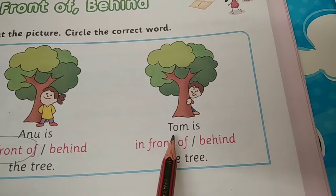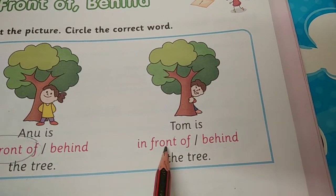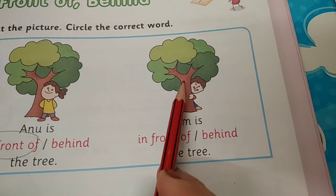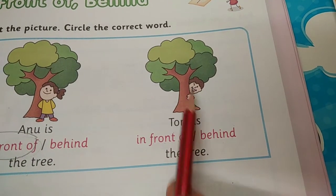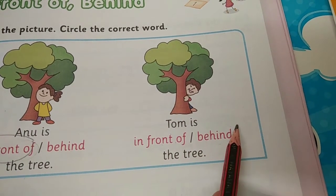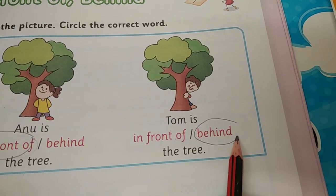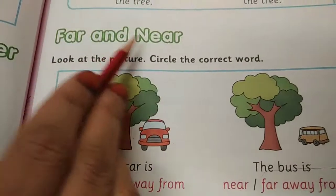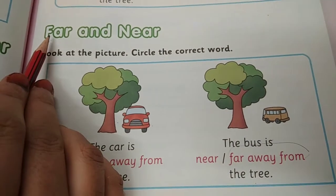Same way, Tom is in front of or behind the tree? Tom, aage hai tree ke ya peechhe hai? Yes, he is behind. So the word behind will be circled.